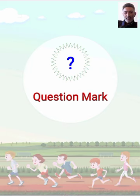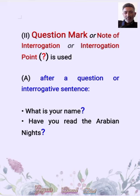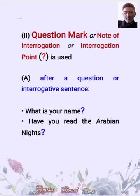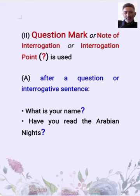Let's first see how and where we use a question mark. Question mark is also called note of interrogation or interrogation point. It is used — number one — after a direct question or interrogative sentence. For example: 'What is your name?' and 'Have you read the Arabian Nights?' These two sentences are direct questions or interrogative sentences and therefore note of interrogation or question mark is used as the terminal point with them.